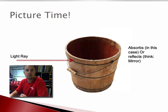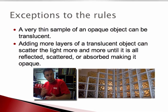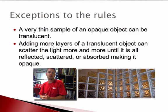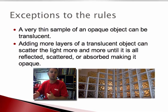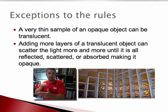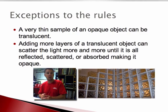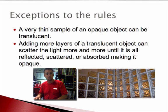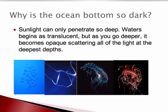There are some exceptions to these rules. A very thin sample of an opaque object could be translucent — think of a sheet of paper: you can't normally see through it, but if it's very thin you might be able to read writing through it. Also, adding more layers of a translucent object scatters the light more and more until it's all scattered, reflected, or absorbed, making it effectively opaque. A great example is why the ocean bottom is so dark — sunlight can only go so deep, and the water, being translucent, becomes opaque as layers accumulate.